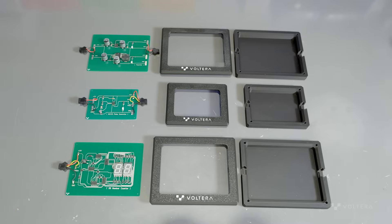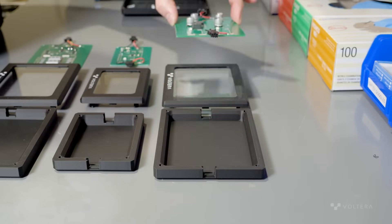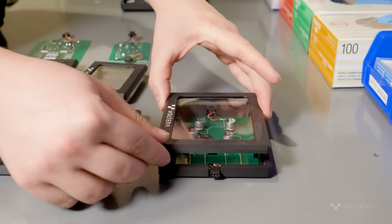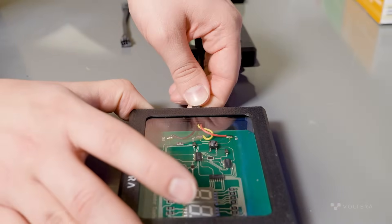After the 99 decimal counter is finished, the students can control the speed of counting by changing the resistance on the pulse generating circuit.